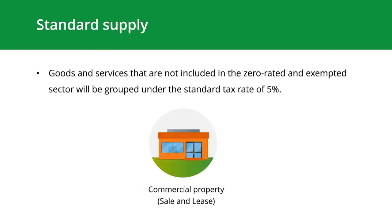Standard supply: the goods and services that are not included in zero-rated and exempted sectors will be grouped under the standard tax rate of 5%. The VAT treatment of real estate depends on whether it's commercial or residential property. Only the first supply provided to residential buildings is categorized under zero-rated, so that the owner can claim VAT incurred on construction purchases. From the second supply onwards, the supply to residential buildings will be exempted, and supplies related to commercial properties — including sales or leases — will be taxable at the standard VAT rate of 5%.